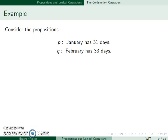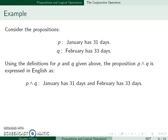So for example, we'll have two propositions. P stands for January has 31 days, and Q, February has 33 days. This means P and Q is expressed in English as January has 31 days and February has 33 days.